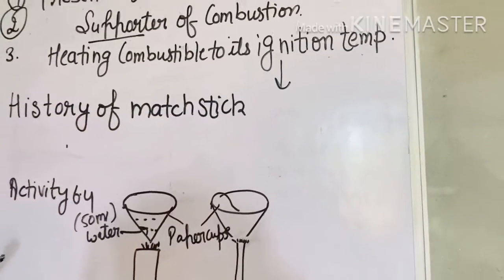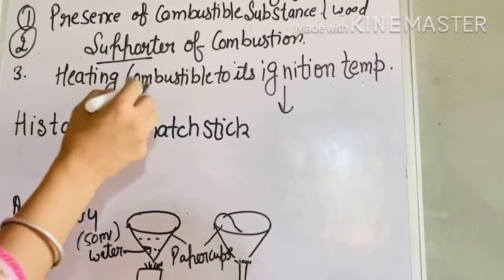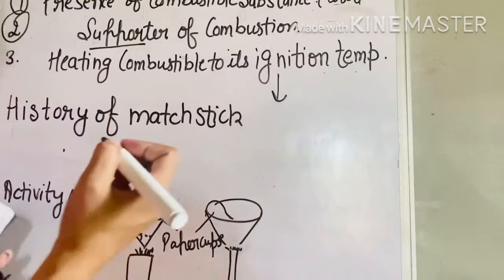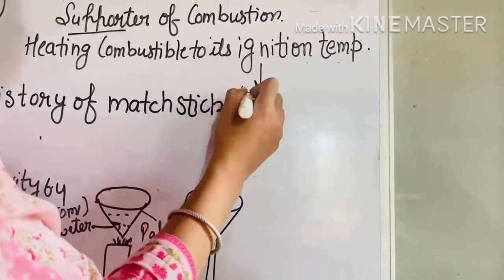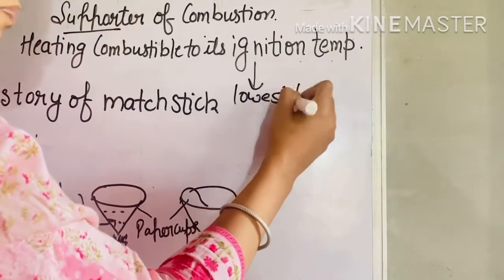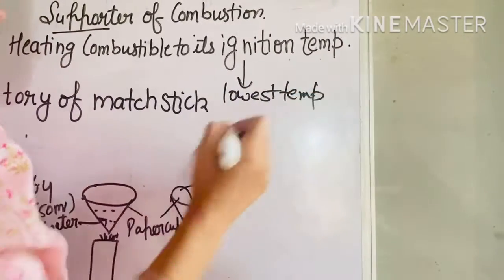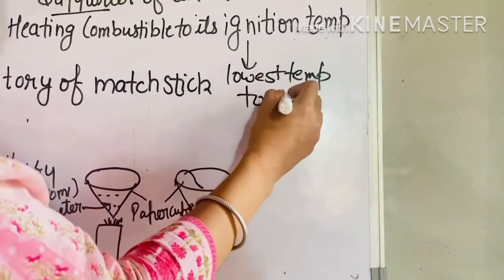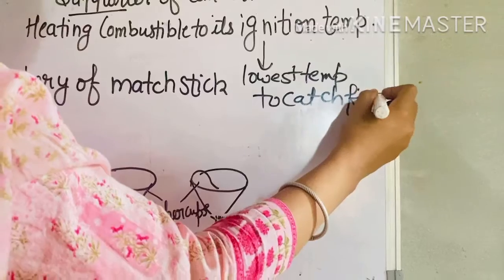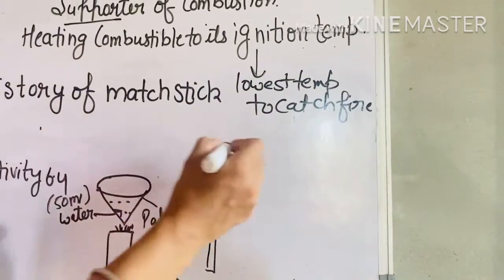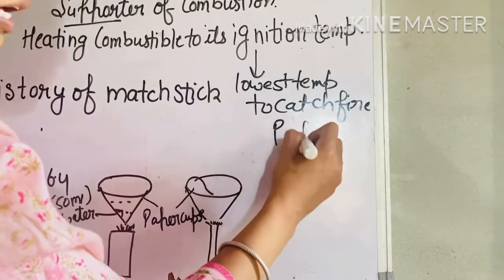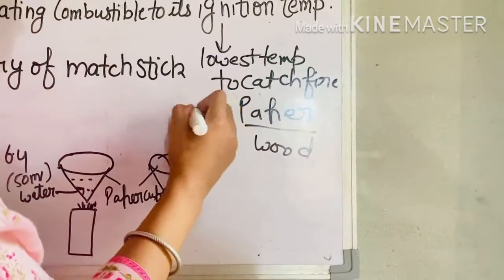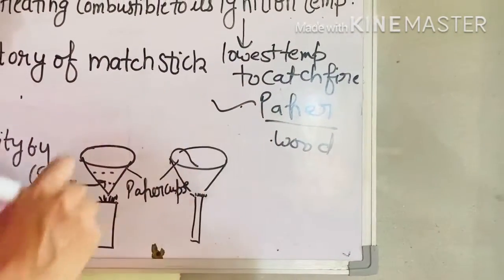The third condition is heating the combustible substance to its ignition temperature. The ignition temperature is the lowest temperature at which a substance catches fire. For example, paper has a lower ignition temperature as compared to wood.